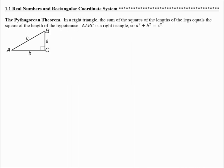This is lesson 1.1 Real Numbers and Rectangular Coordinate System. Your objectives are to use the Pythagorean Theorem to find a side of a right triangle, to use the distance formula to find the length between two points on a coordinate plane, and to use the midpoint formula to find the midpoint of a segment on the coordinate plane.